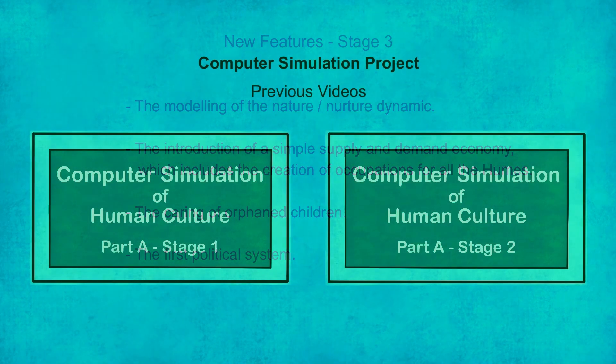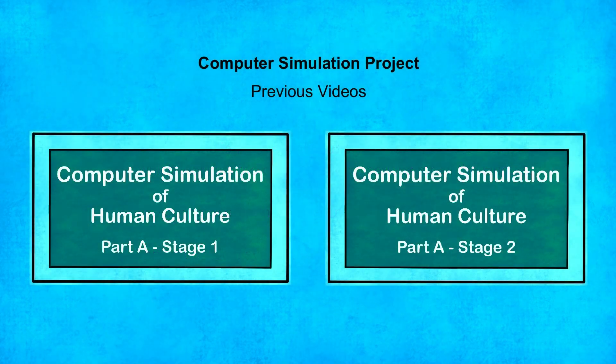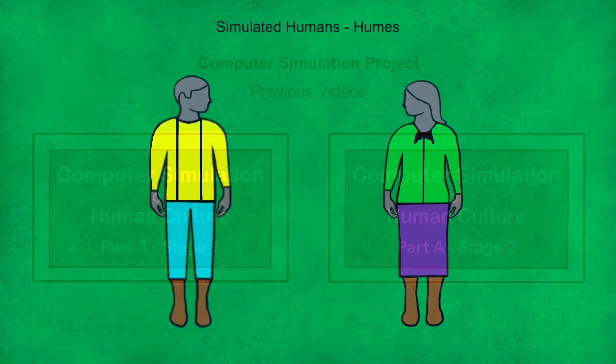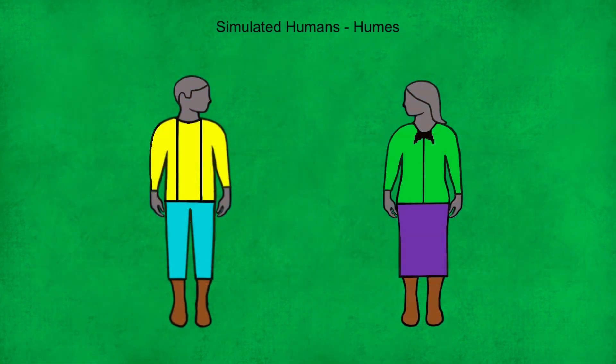Each stage of this simulation project builds on the previous stage, so watching stages 1 and 2 first is recommended. Before we start running the simulation, here's a quick review of how it's set up. Humans are represented in the simulation by what are referred to as Humes.